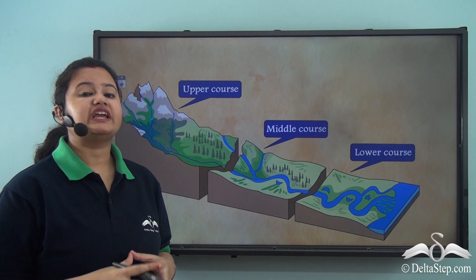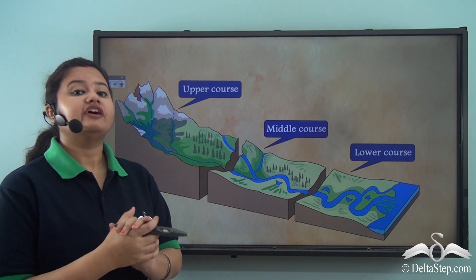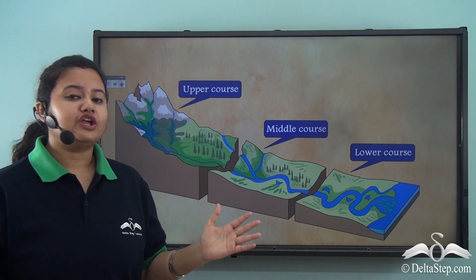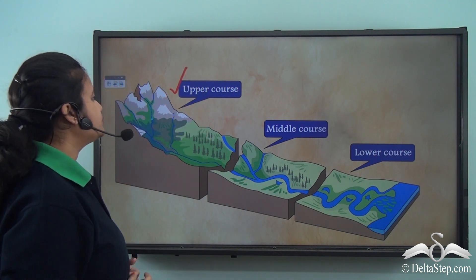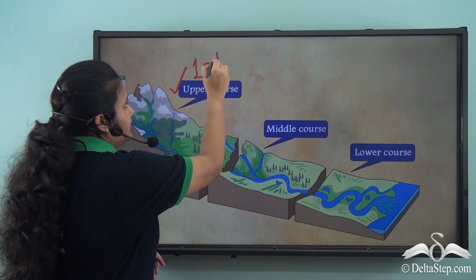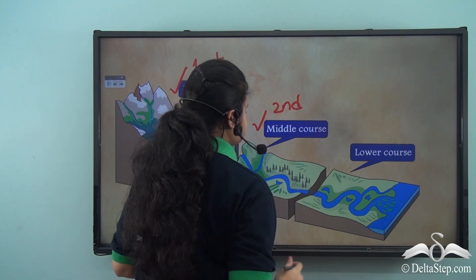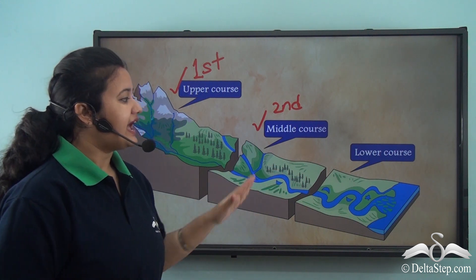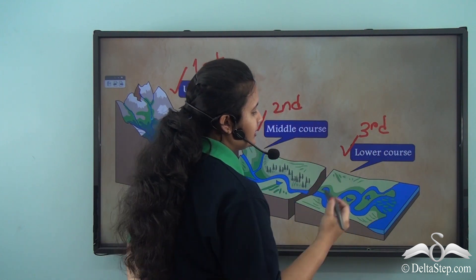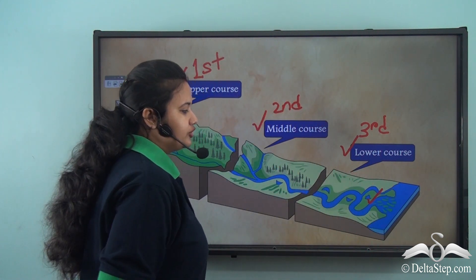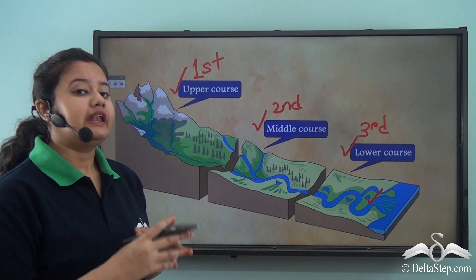Rivers play an important role in the formation of plains. Various types of plains are formed at various stages of a river. The entire journey of a river can be broken into three stages: the upper course, where the river begins; the middle course, where the volume of the river increases substantially; and the lower course, where the river ends by converging with a larger water body such as a sea or ocean.